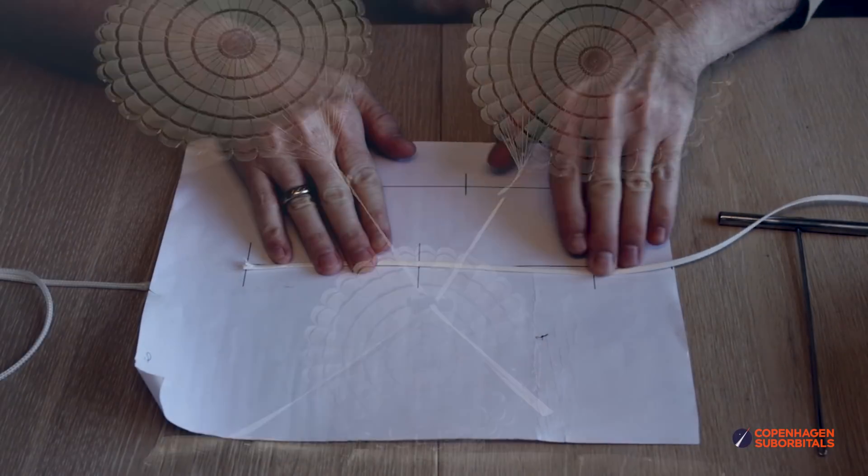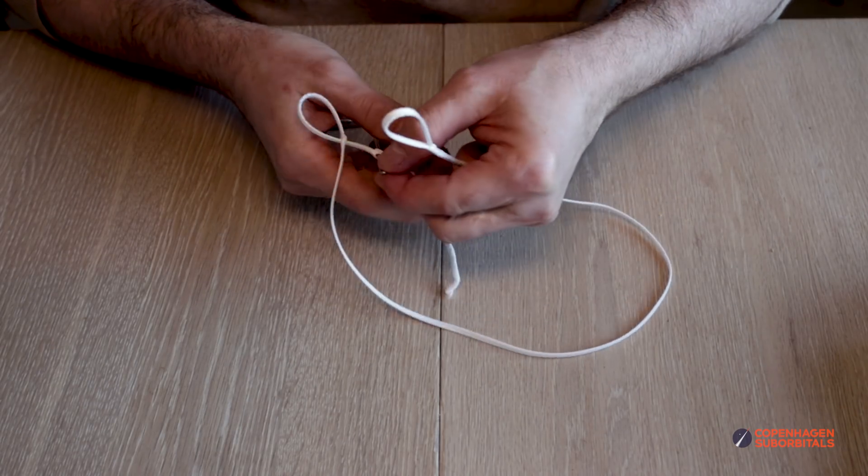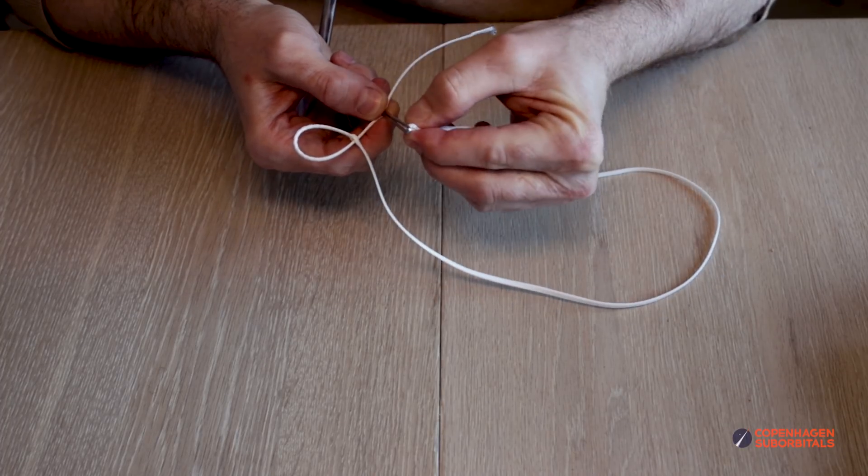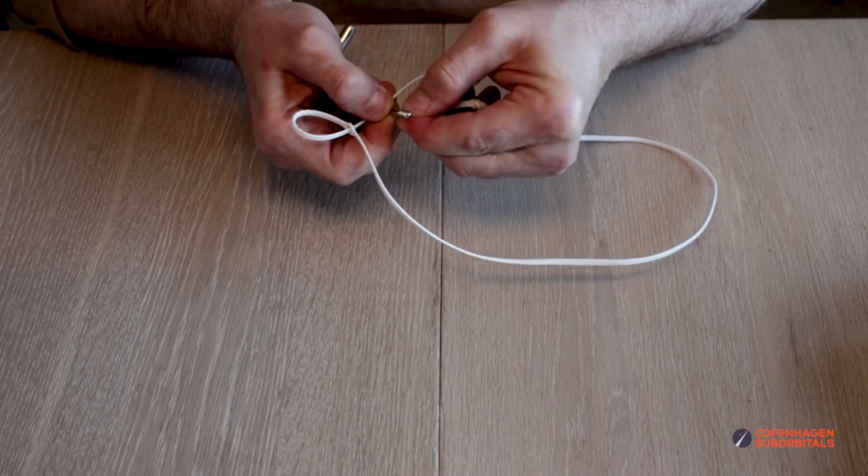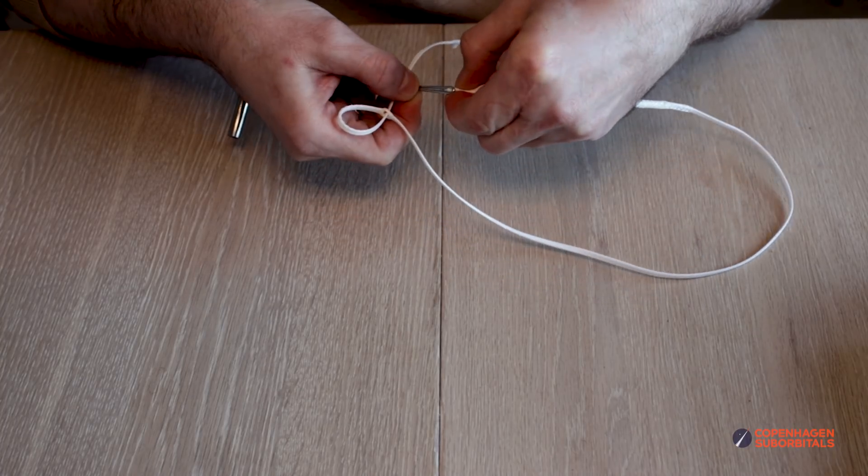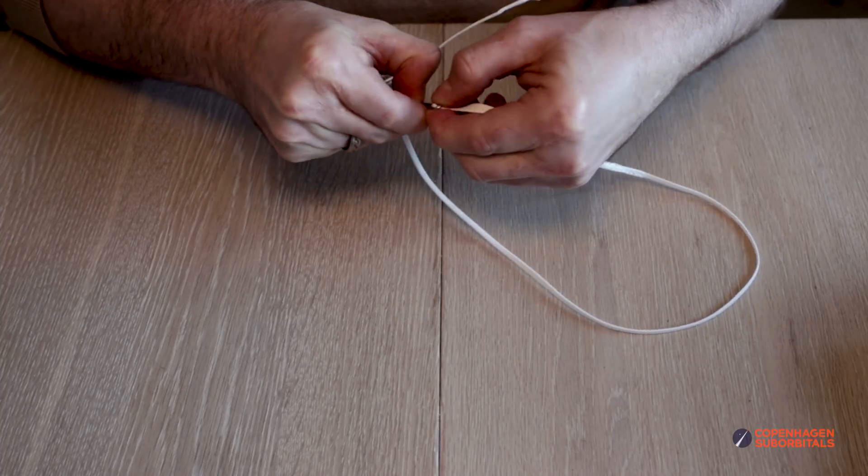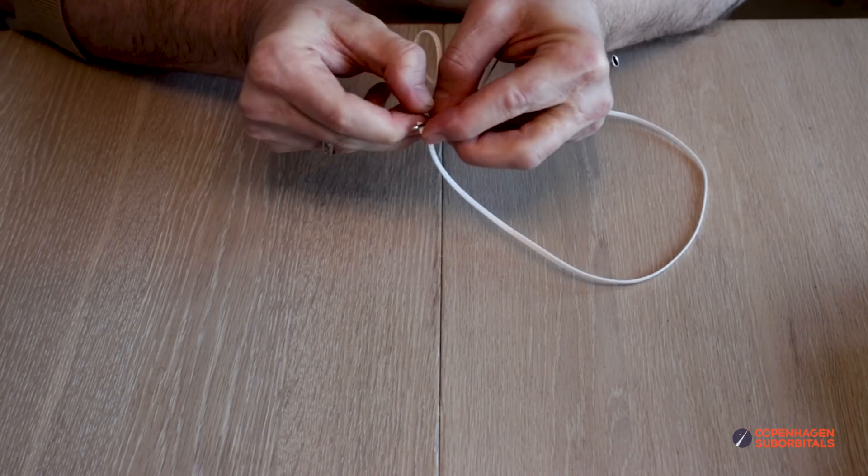We can then do it once more for the other end of the line. Now this is a little bit tricky because we have an eye here, but it's basically just the same thing to do. It can be difficult because there's now more line that will go through itself, so sometimes this can be a little tricky, which it is now actually.